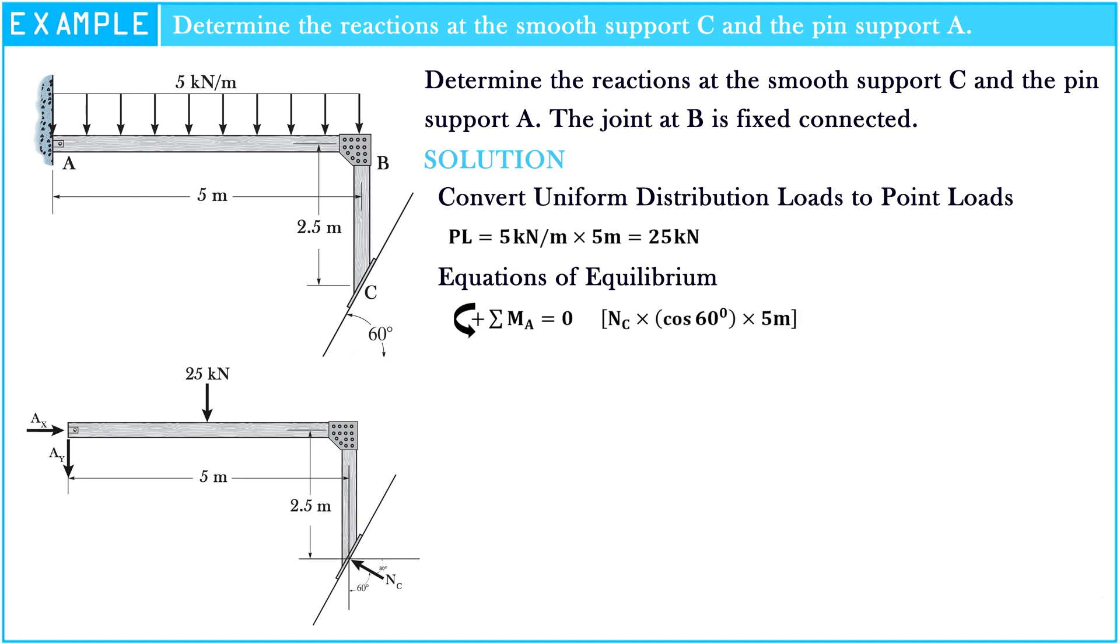Nc times cosine 60 degrees times 5 meters, minus Nc times sine 60 degrees times 2.5 meters, minus 25 kN times 2.5 meters equals zero. Hence, Nc equals 186.6 kN.